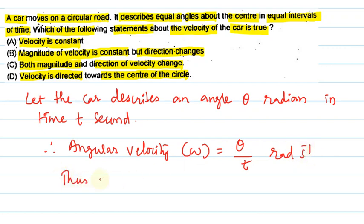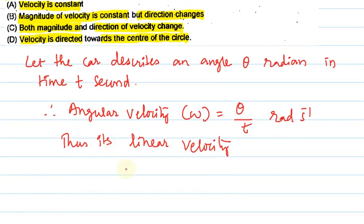Thus, its linear velocity v is equal to r omega. V is equal to r omega which is r theta by t.